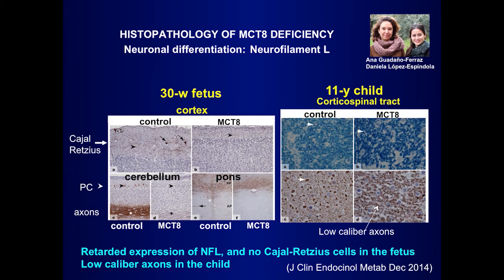We analyzed a 30-week fetus and an 11-year-old child, and we show evidence of alteration of neuronal differentiation by looking at expression of neurofilament. You can see here the cortex in the control versus the MCT8. There is expression of neurofilament in the control, and no expression in the MCT8.